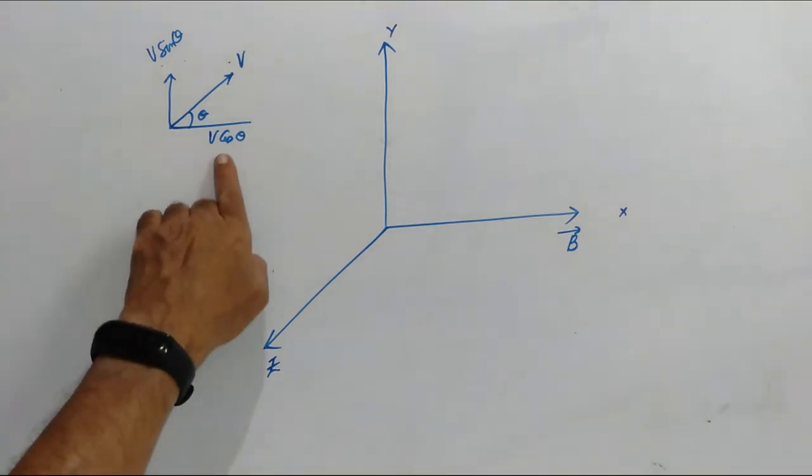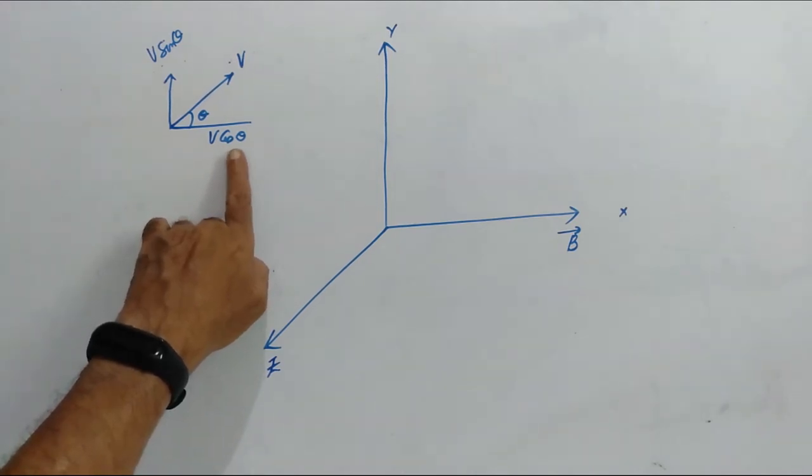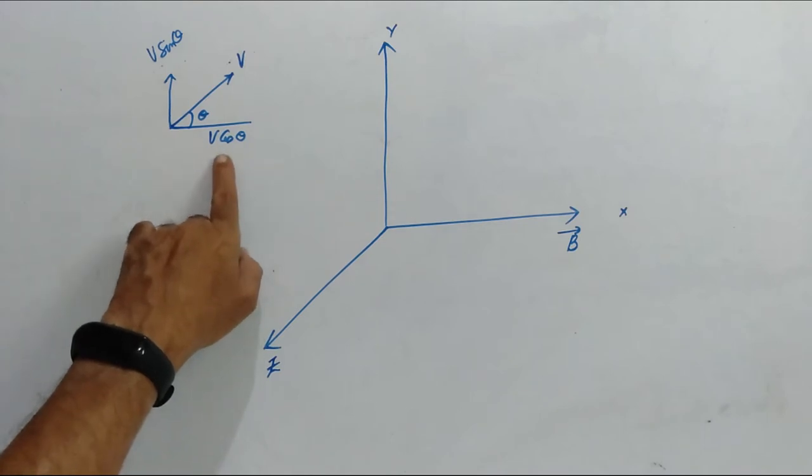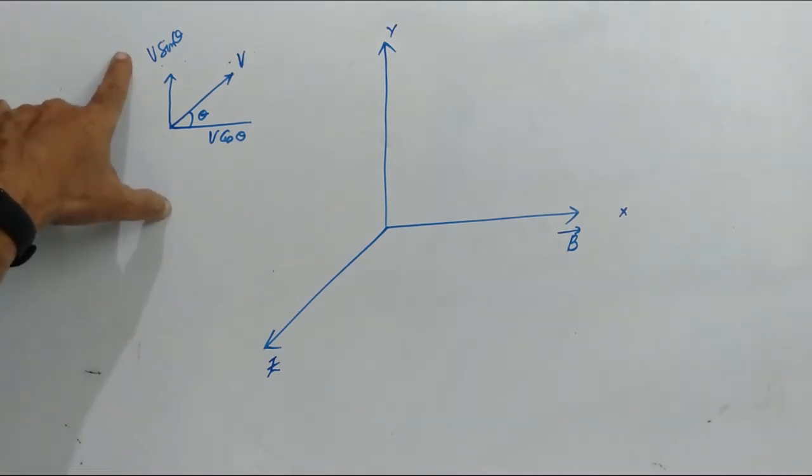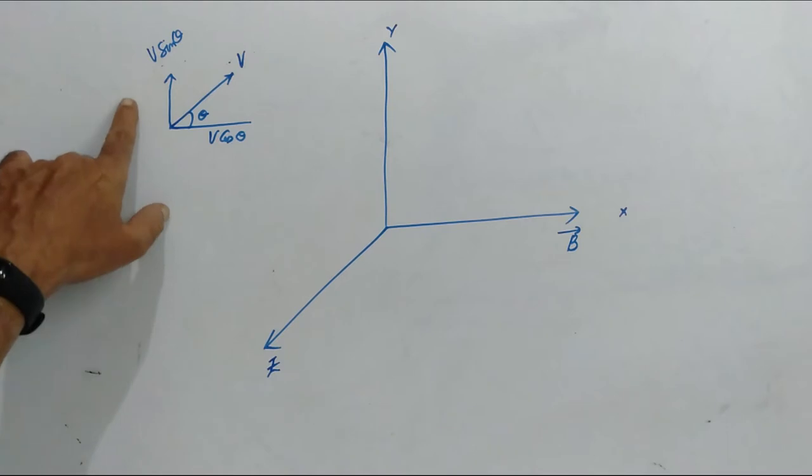Because of this component, as it is parallel to the magnetic field, it will not be changed or it remains unchanged. Because we have learnt that no force is being experienced by the charged particle when it is projected along the direction of the magnetic field. But here, because of this component, it should move in a circular path.